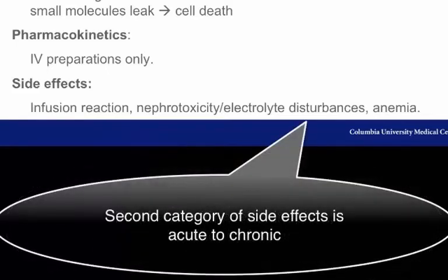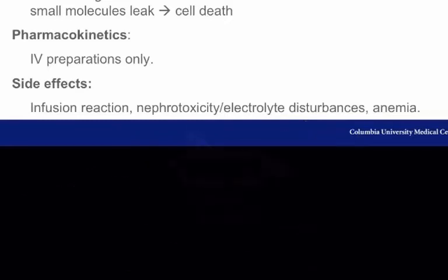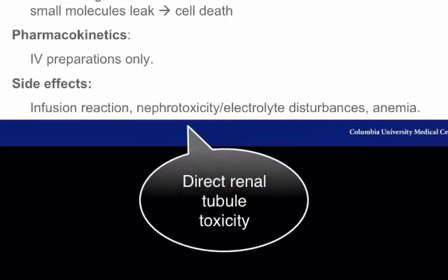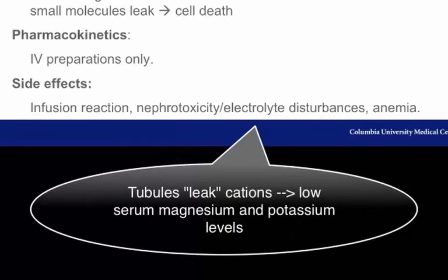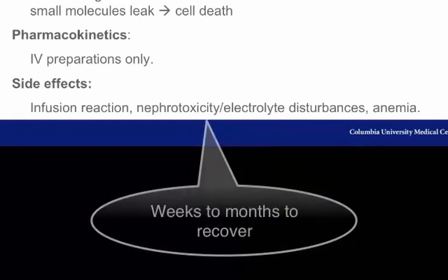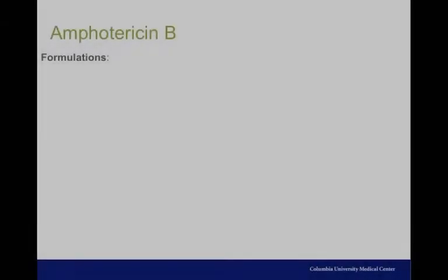The other major side effects can be thought of as acute to chronic. Amphotericin B is extremely nephrotoxic, resulting in acute kidney injury from direct renal tubular toxicity. This also results in electrolyte disturbances. This nephrotoxicity takes weeks to months to recover.